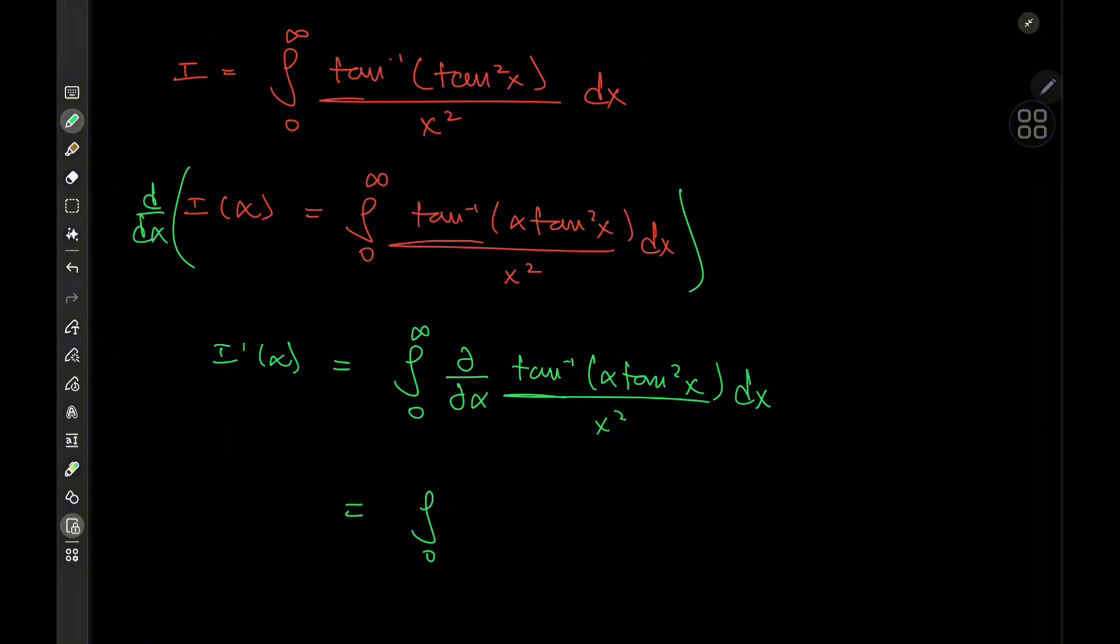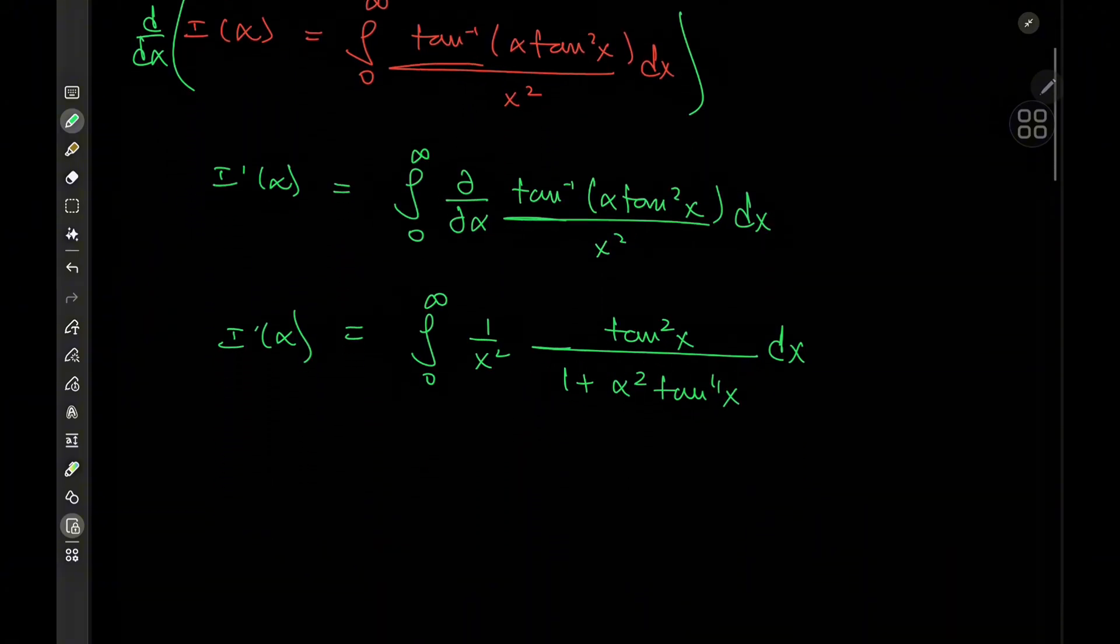Now because we're differentiating partially, that means we can just ignore the 1 over x squared term for differentiating purposes. And differentiating the arctangent yields 1 plus alpha squared times tangent to the fourth power of x. And because of the chain rule, we do have this tangent squared x term up top. Okay, cool. That actually looks like we've made things worse. But they do look cooler. I mean, this integral is a lot cooler or slightly cooler than the integral we started off with. And I'll take that as a good sign.